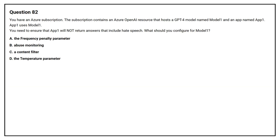Question number 82. You have an Azure subscription. The subscription contains an Azure OpenAI resource that hosts a GPT-4 model named Model1 and an app named App1. App1 uses Model1. You need to ensure that App1 will not return answers that include harmful content. What should you configure for Model1?